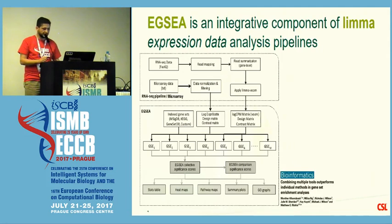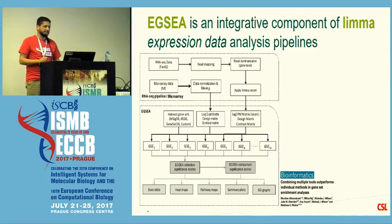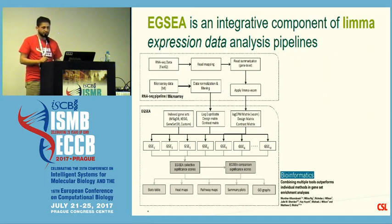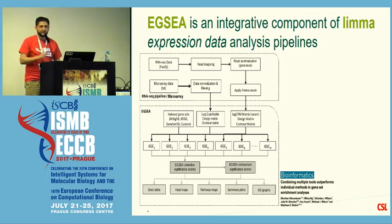To do this, we proposed EGSEA, an ensemble approach that takes normalized expression data — RNA-seq or microarray — from the limma analysis pipeline, using the limma and edgeR packages. We feed this into 12 different base methods, then take the individual rankings and statistics to combine them and improve the overall ranking of gene sets.